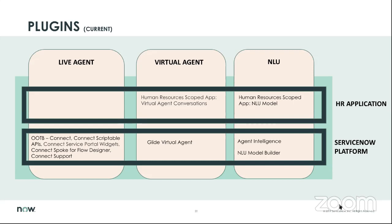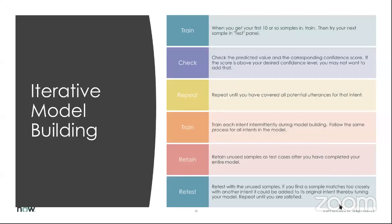For HR specifically, you'll need the HR scoped app virtual agent conversations plugin, which engages the Glide virtual agent plugin that's part of the platform. For NLU, you need the NLU model plugin — specifically the human resources scoped app NLU model — which leverages the agent intelligence and NLU model builder plugins. Be sure that if you're using VA and NLU, you have these plugins activated so you can consume what you're trying to do.